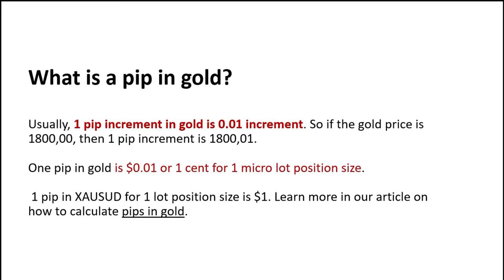Usually, one pip increment in gold is 0.01. So if the gold price is, for example, 1,800, then one pip increment will be 1,800.01. So it's very easy to calculate as a trader.